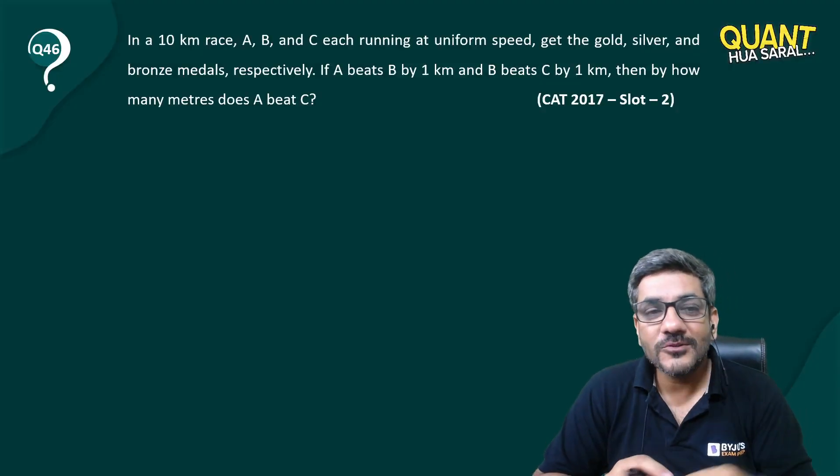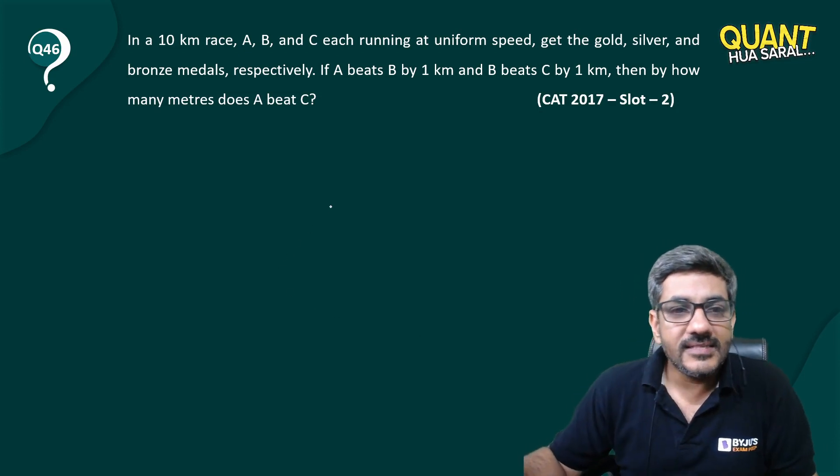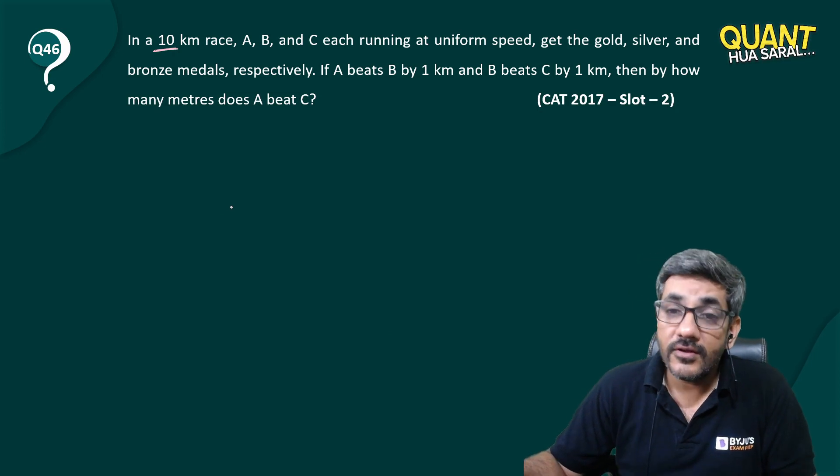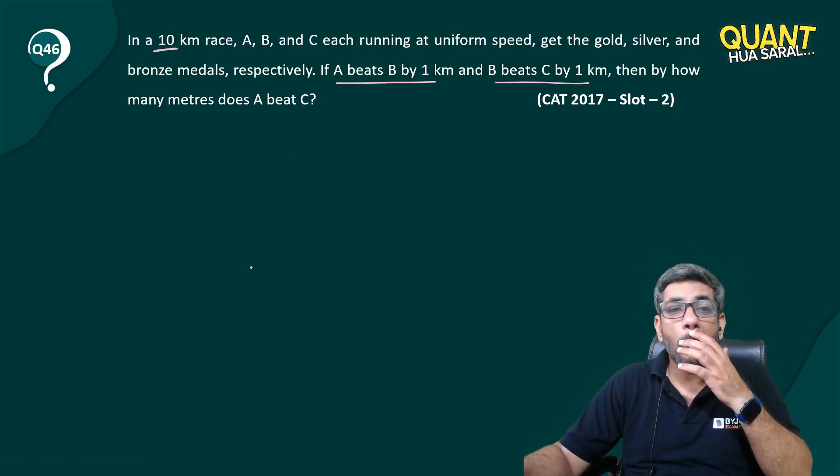Hi everyone, welcome back to question number 46 of this series. Let's have a look at this. It says in a 10 kilometers race, A, B, and C each running at uniform speed get the gold, silver, and bronze medals respectively. A beats B by 1 kilometer, B beats C by 1 kilometer, then by how many